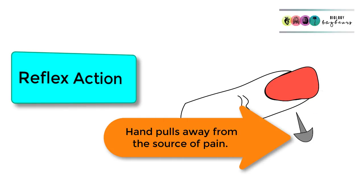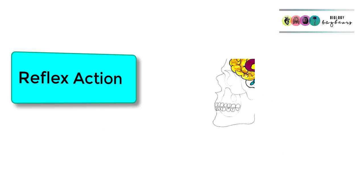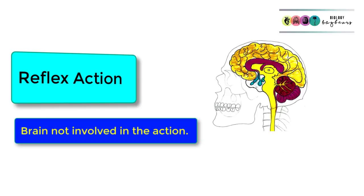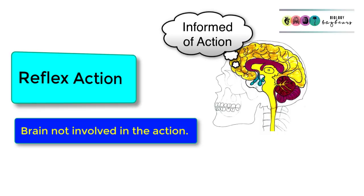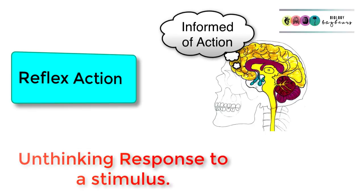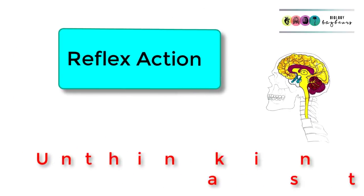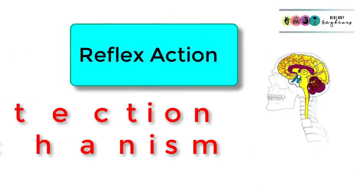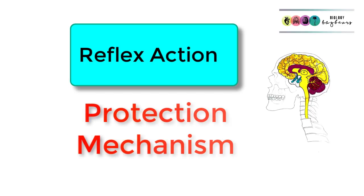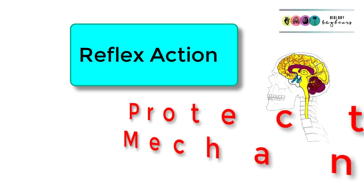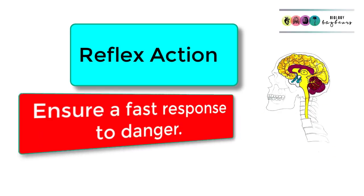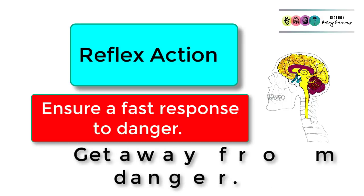The key thing about reflex actions is that your brain is not involved in deciding the action — it's merely informed of the action. It's not a thinking response; it's an unthinking response to a stimulus. Reflex actions are really important for keeping us safe — they're a protection mechanism, meaning we can respond very quickly to potential danger and take evasive action.